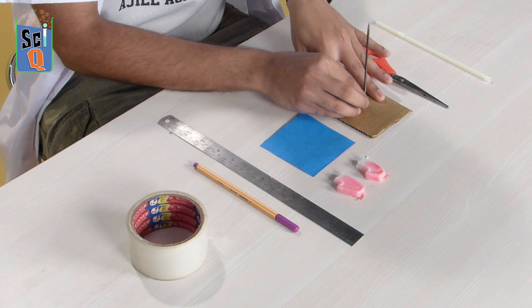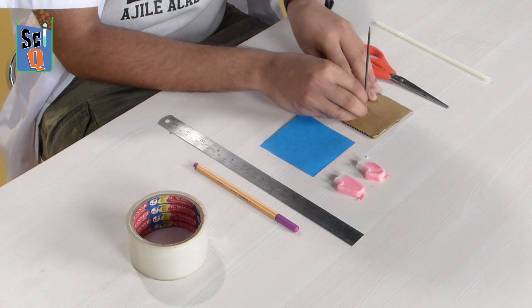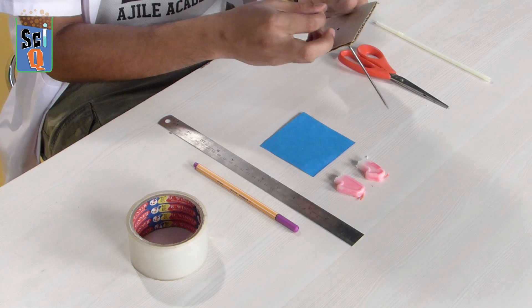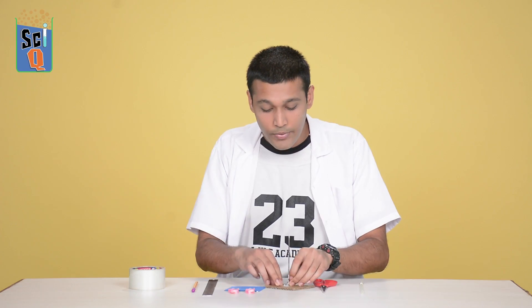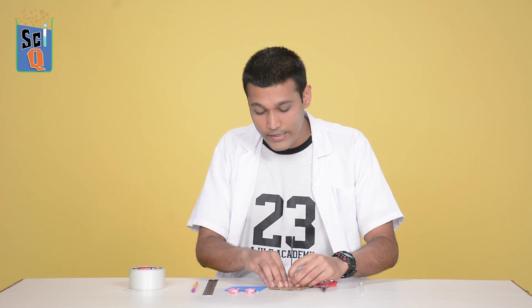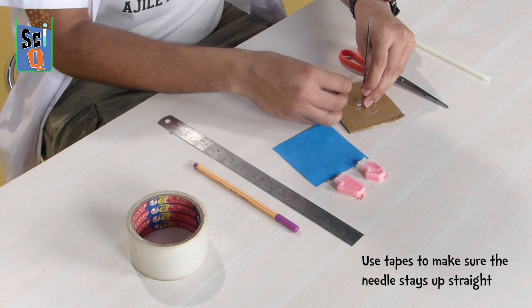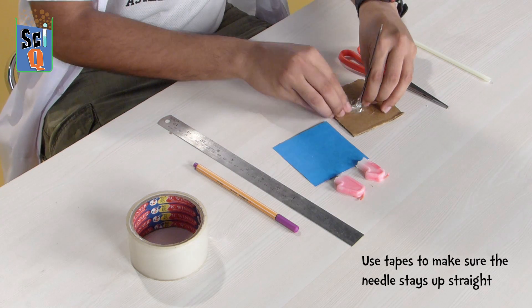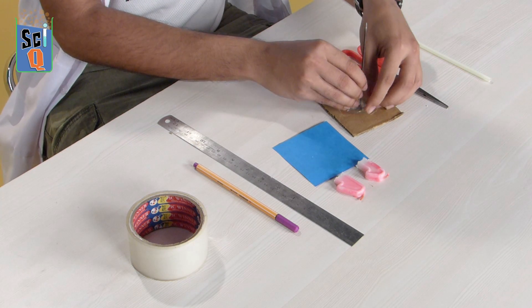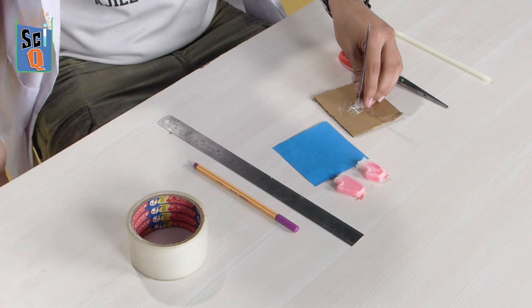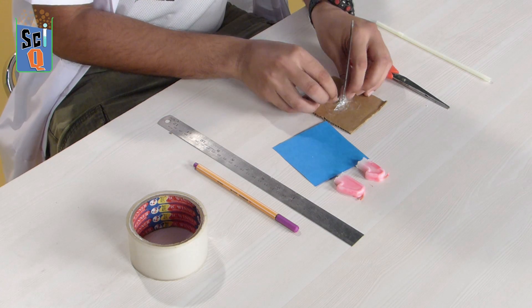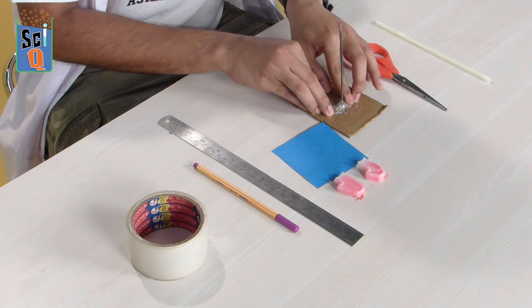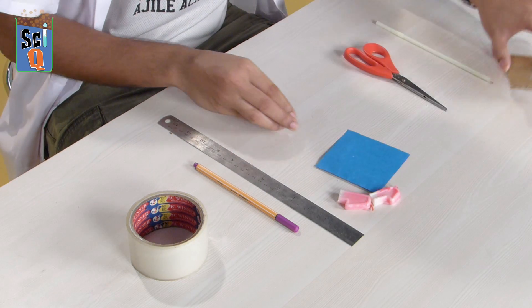Now this will shake a little bit. What you should be doing is taping it down a little bit. So I've got some pre-cut tapes here. I'm going to put that down and I'm going to be using these tapes to make sure my knitting needle stays up straight. Maybe throw on other pieces as well. Now that's done, let's keep this aside for just a bit.